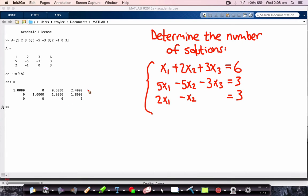So now we can just use what we already know to look at this reduced row echelon form and see the number of solutions to this system.